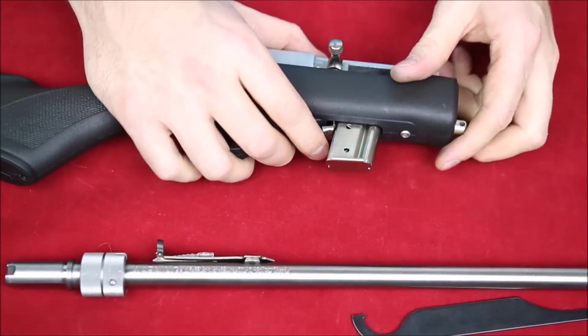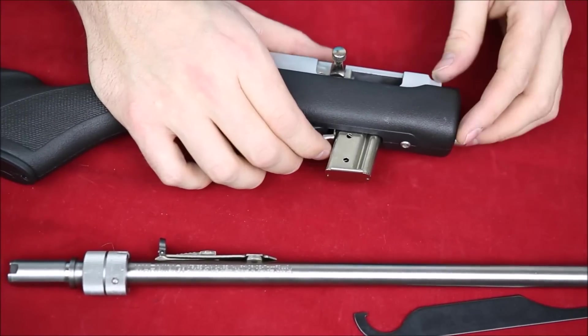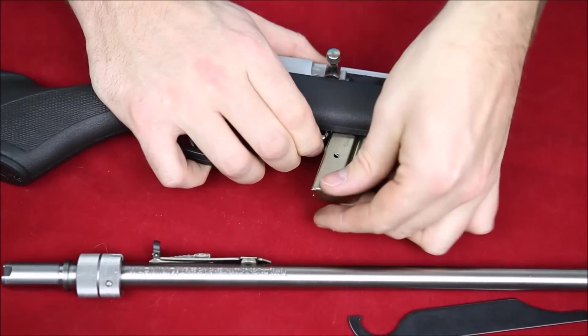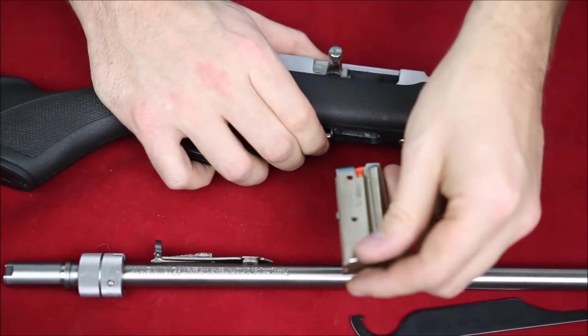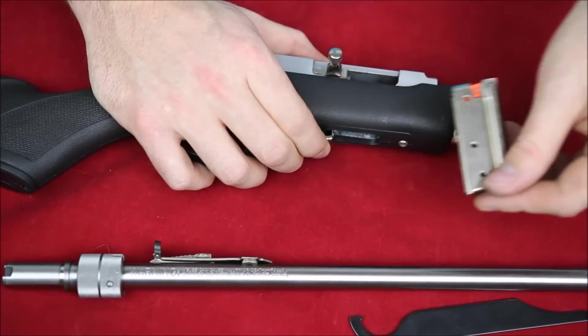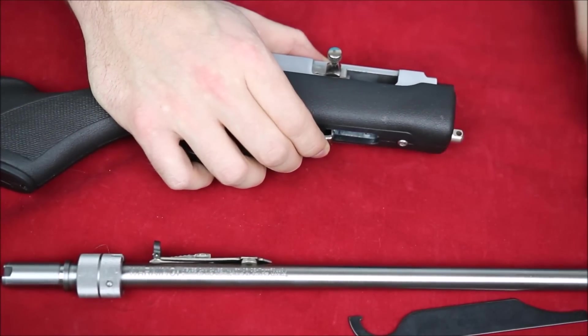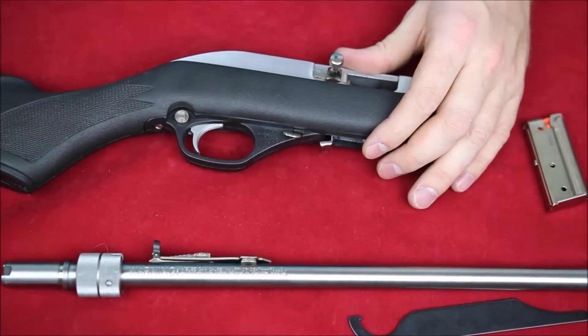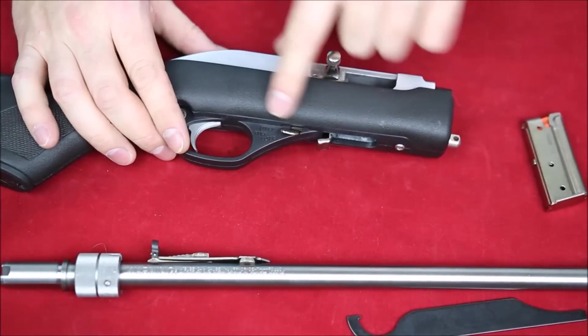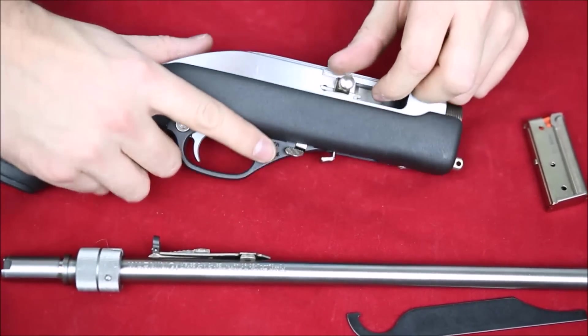The magazine release is kind of a weak part on these Marlin 795s and Papooses. It's a two-hand affair, so one hand has to hold that down and the other hand has to release the magazine. This is the seven-round magazine it came with, but they also sell ten-rounders for these things as well.